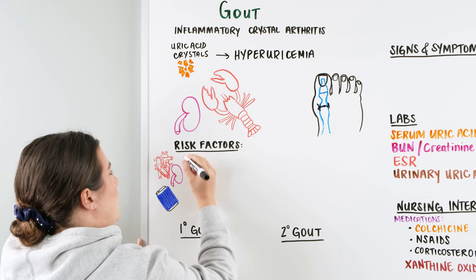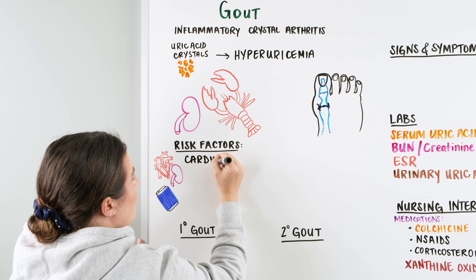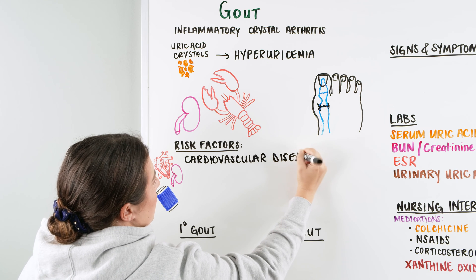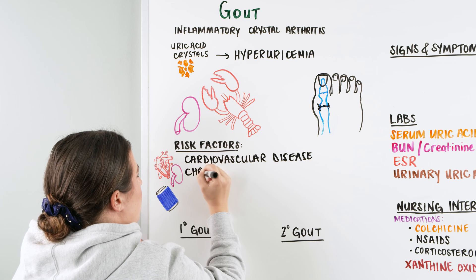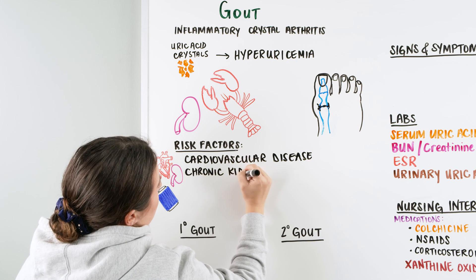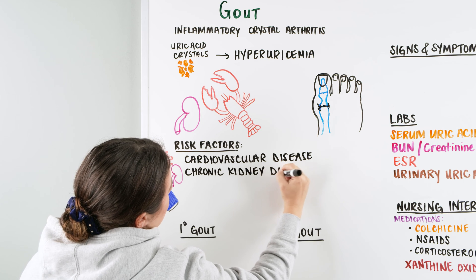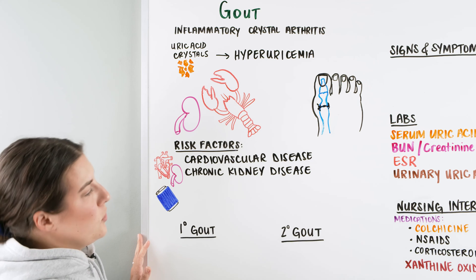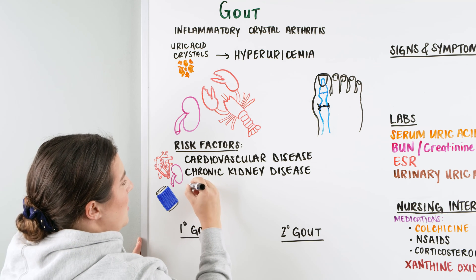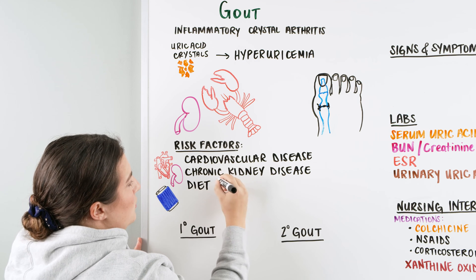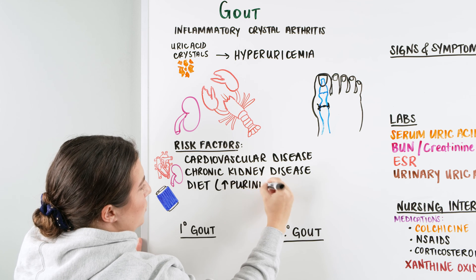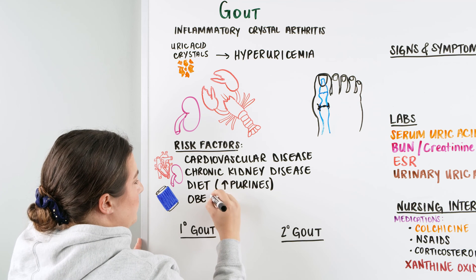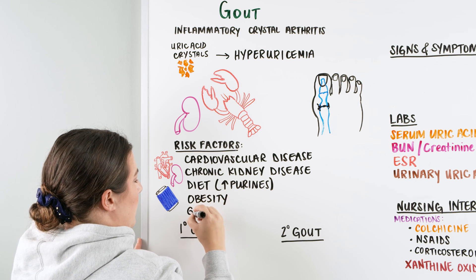Some of those risk factors can be things like cardiovascular disease, because there can be some medications associated with it. There can also be chronic kidney issues or failure. If you're using lots of diuretics, that can also cause some issues with gout. It can also be the type of diet you're on — if it's high in purines like we talked about, things like shellfish and alcohol. Obesity is another one, and there's also a genetic component as well.